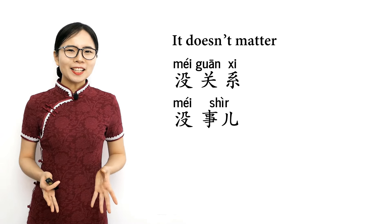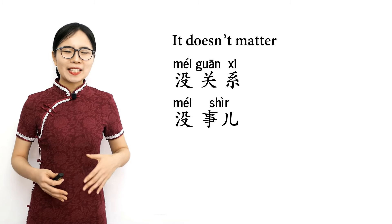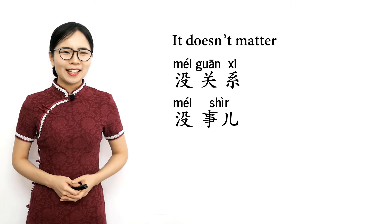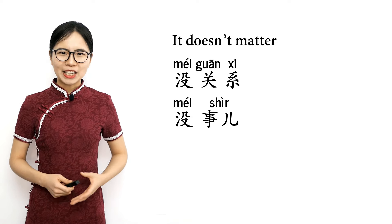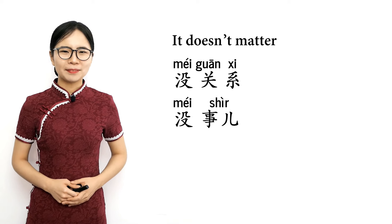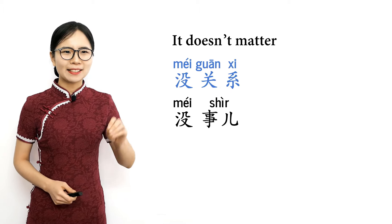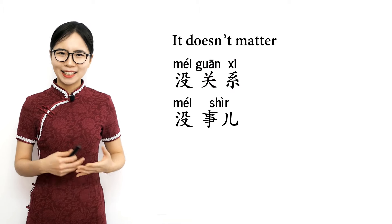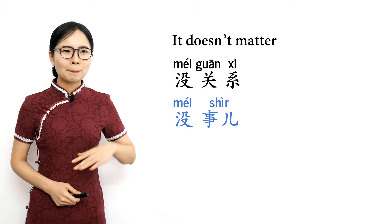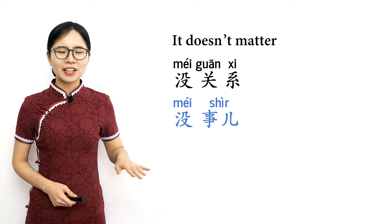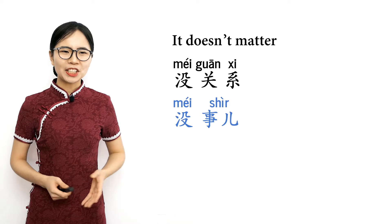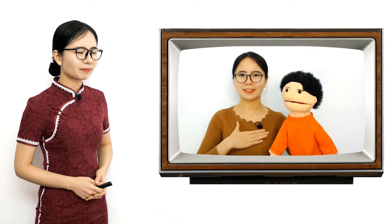If someone apologizes to you and you want to say 'it doesn't matter' or 'don't worry about it,' you can say 没关系. Please repeat after me: 没关系, 没关系 — it doesn't matter. Ouch! 对不起 — I'm sorry. 没关系 — it doesn't matter.